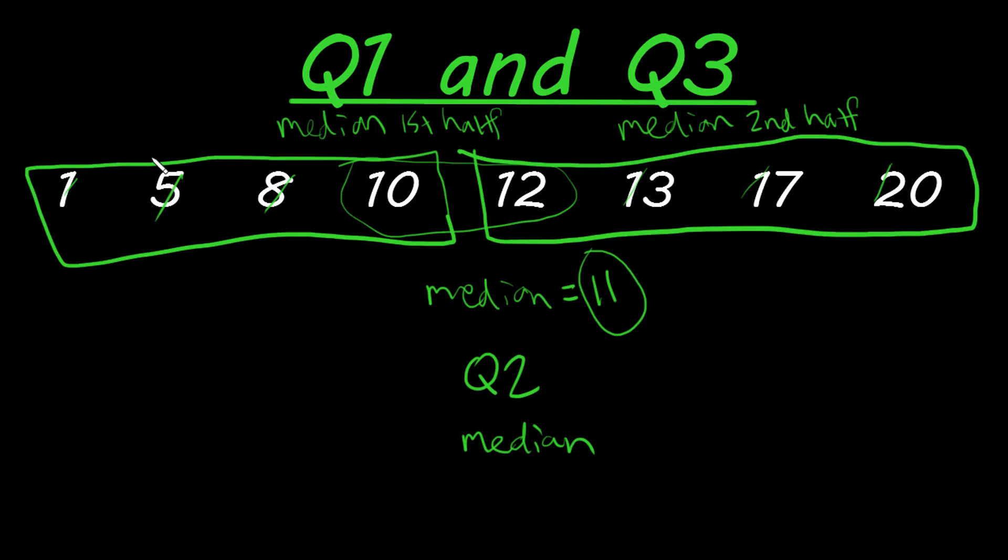So to find our median, we need to find the middle of five and eight. So five plus eight is going to be equal to 13 divided by two, which is going to be 7.5. So Q1 is going to be equal to 7.5.